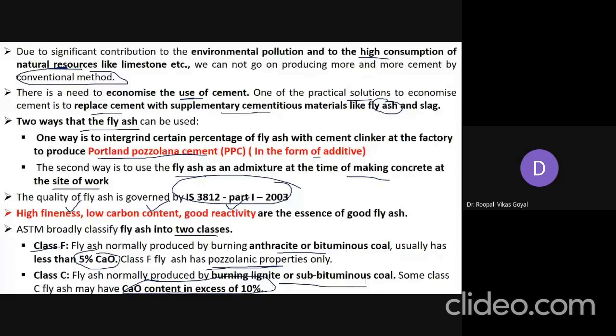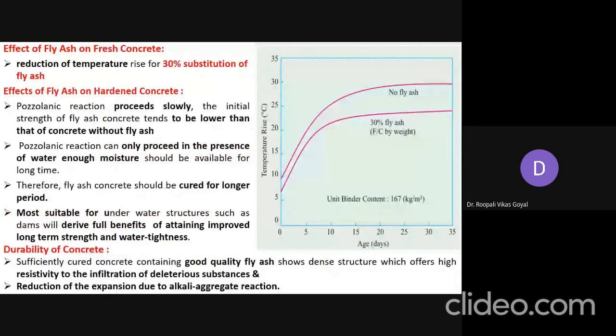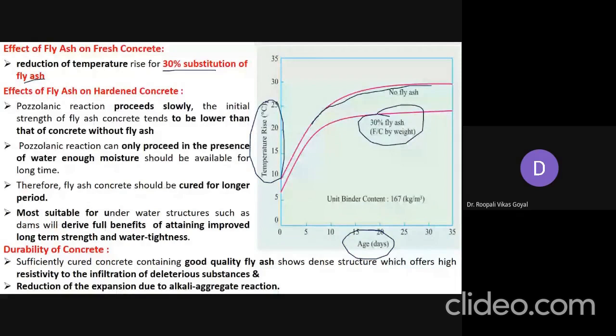Regarding the effect of fly ash on fresh concrete: there is a reduction in temperature rise with 30% substitution of cement by fly ash. A graph showing temperature rise versus age in days demonstrates that when 30% fly ash replaces cement, the temperature rise is reduced. This is very useful for mass concrete where excessive temperature rise is not desirable.